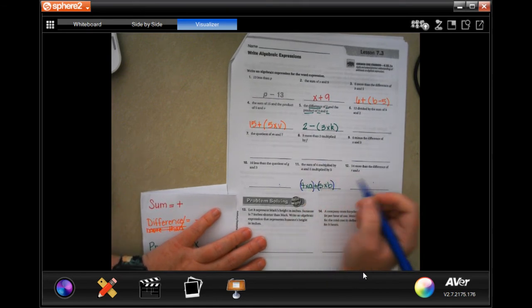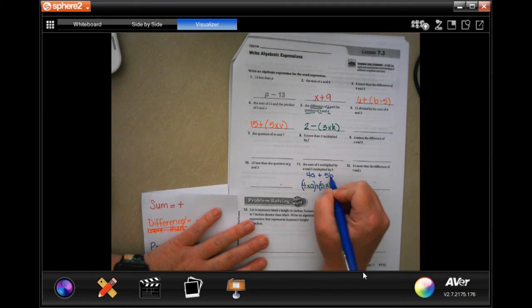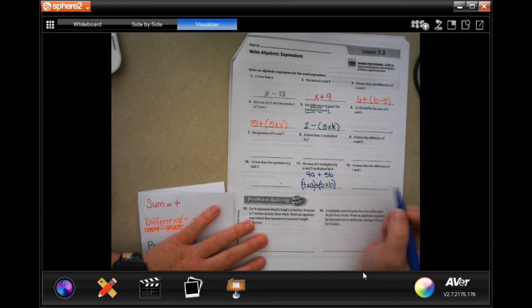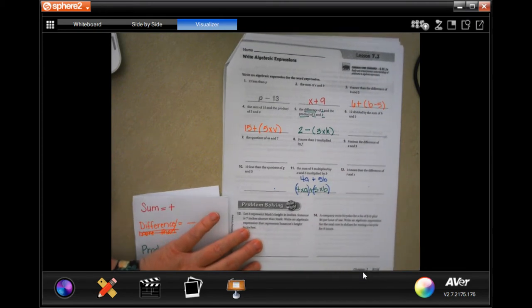However, if I put my parentheses in, it just makes it clear. I could also write 4A and 5B because four times A is 4A and five times B is 5B. So either one of those is just fine.